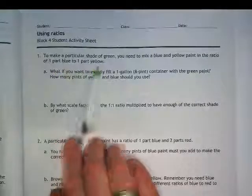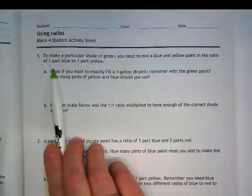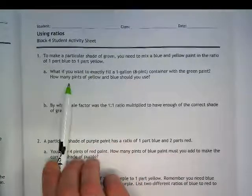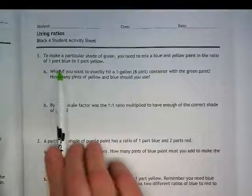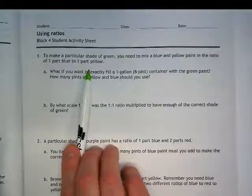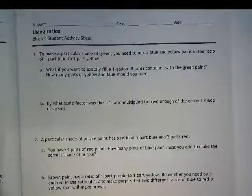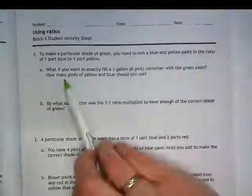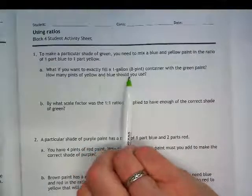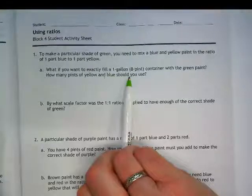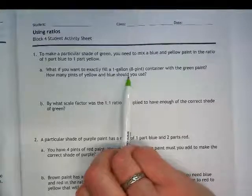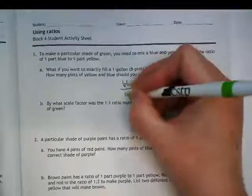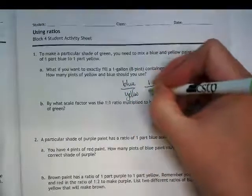To make a particular shade of green, you need to mix a blue and yellow paint in the ratio of one part blue to one part yellow. So we've got one part blue, one part yellow to make the shade of green we're looking for. So if we're going to have a one gallon or eight pint container, and it's blue to yellow, we get one over one.